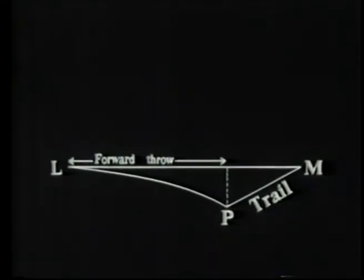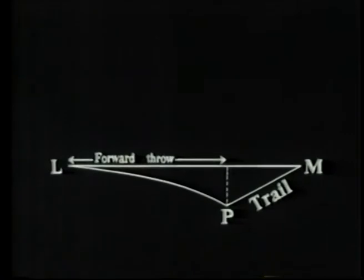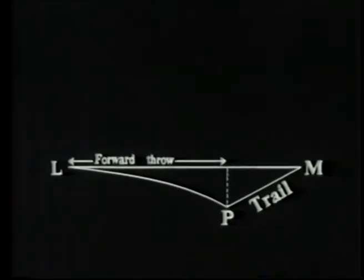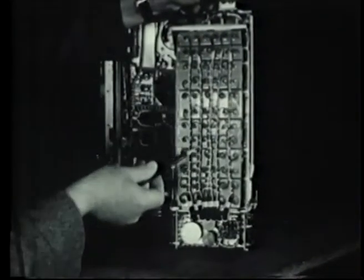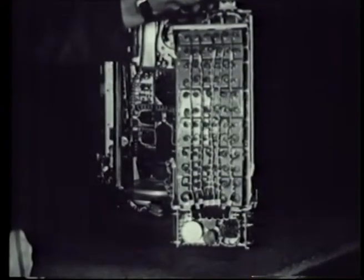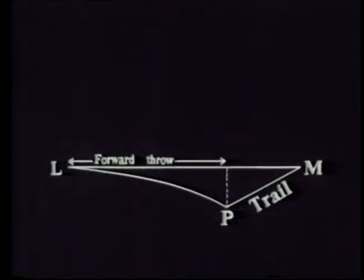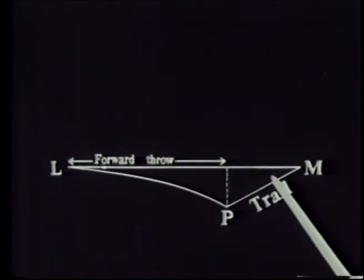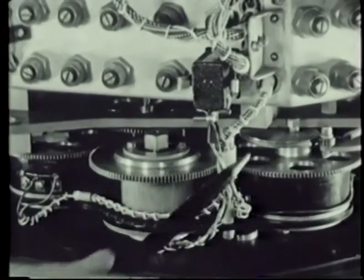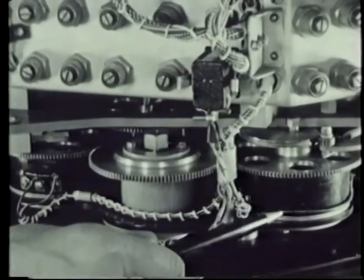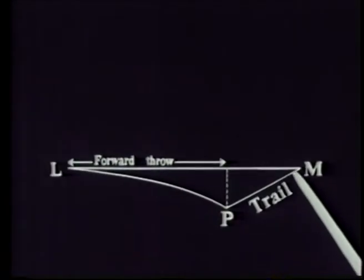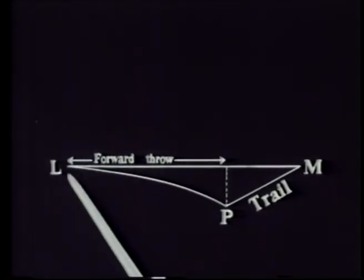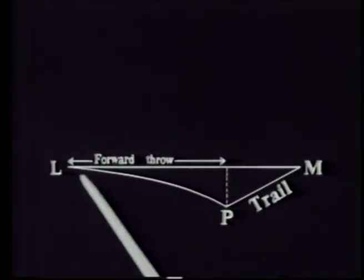Trail results from the effect of air resistance on the horizontal motion of the bomb and this also varies with airspeed, height and the type of bomb. Trail voltage is generated by applying a suitably scaled airspeed voltage to a network of resistors. The trail voltage thus calculated is multiplied by the cosine of the drift angle delta by a potentiometer which is driven by a differential mechanism fed from the heading and track shafts. This gives the track component of trail which is subtracted from the whole range distance to give the forward throw.